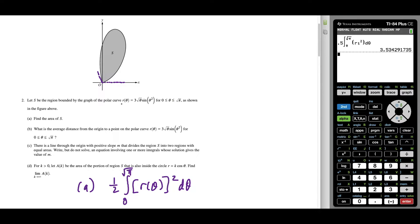And this gives us the value for the area of S, which if we round to the nearest thousandths place, this is going to be 3.534 square units. So this is our answer to part a.